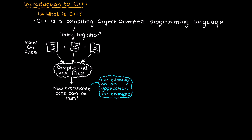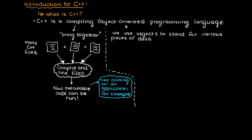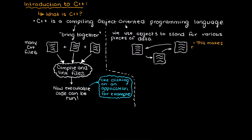Don't worry about this too much right now. Let's briefly talk about what an object-oriented programming language means. In object-oriented programming languages like C++ and Python, we use objects to stand for various pieces of data. This allows our computer programs to essentially interact with one another to change certain pieces of data to whatever the user wishes.